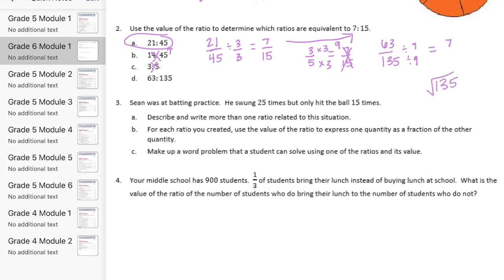135 divided by 9. 9 can't go into 1 but it goes into 13 one time. We end up with 45 and 9 goes into 45 five times. So this is equal to 7 to 15. So that one works.